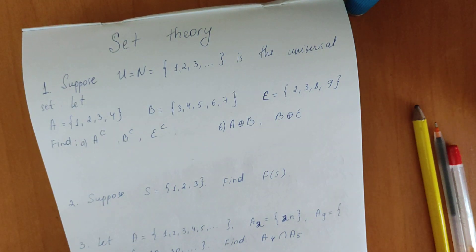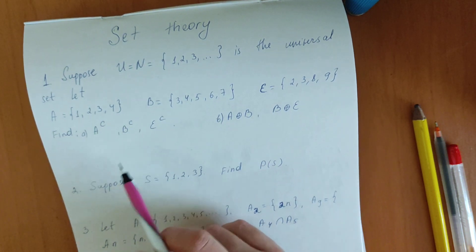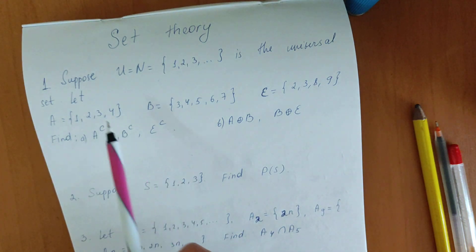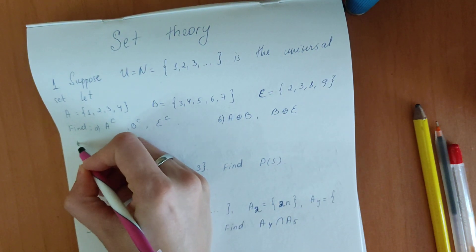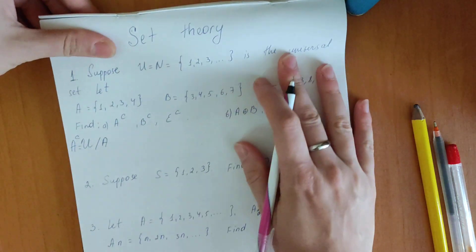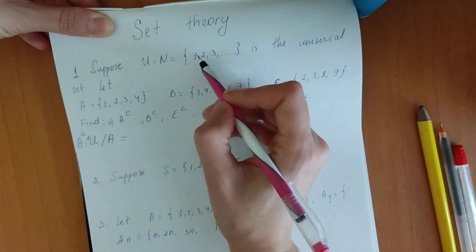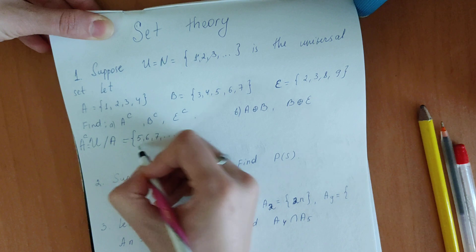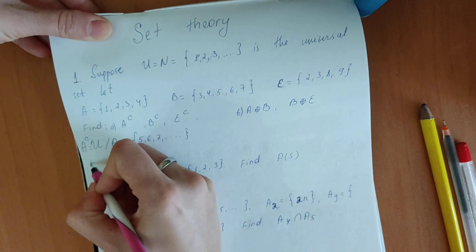Let's find the complement of A, the complement of B, and the complement of C. We know that the complement of a set is the elements which are not in that set. In other words, the complement of A is U minus A. So the complement of A equals U minus A, and if we remove A's elements we will get {5, 6, 7, ...} and continuing to infinity.